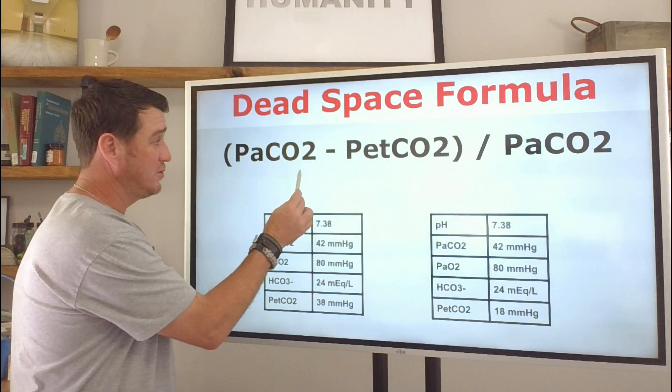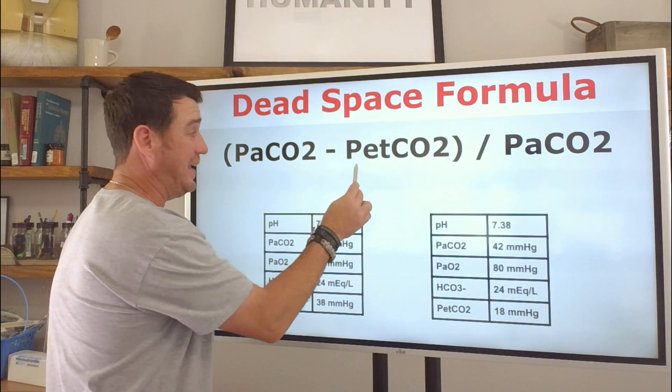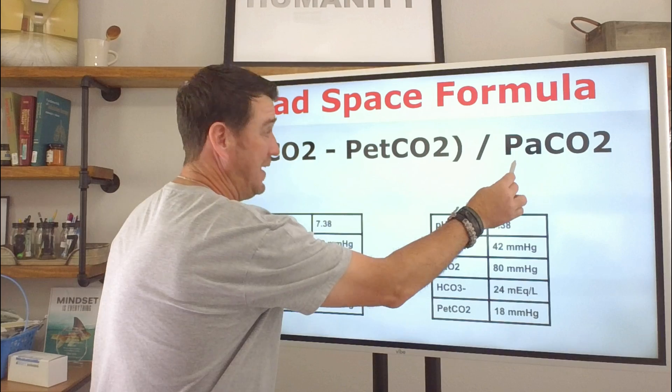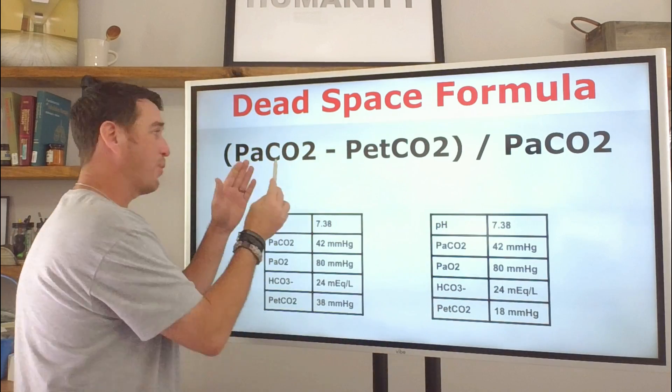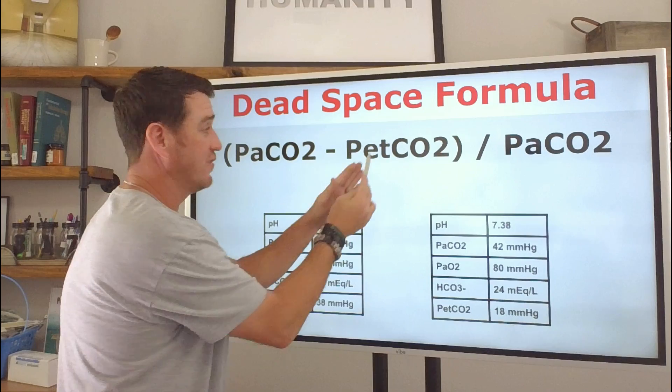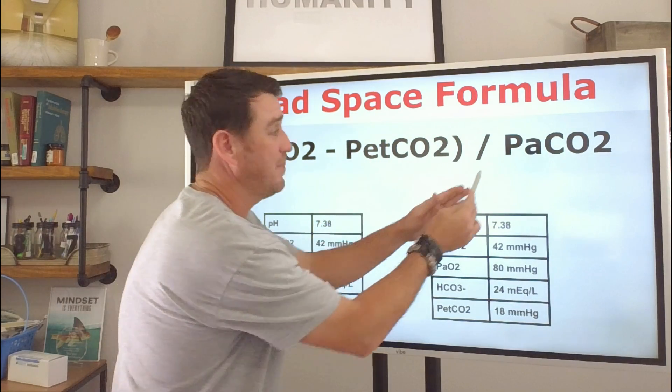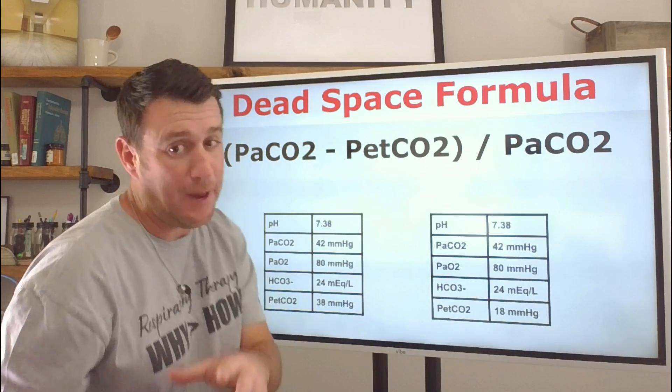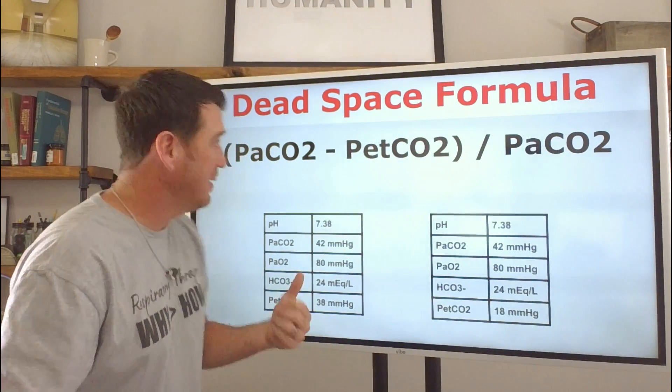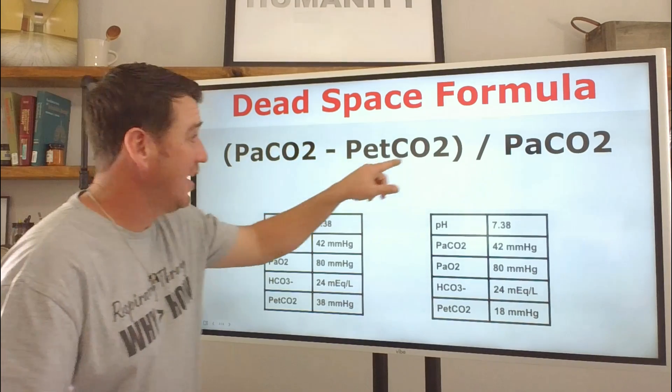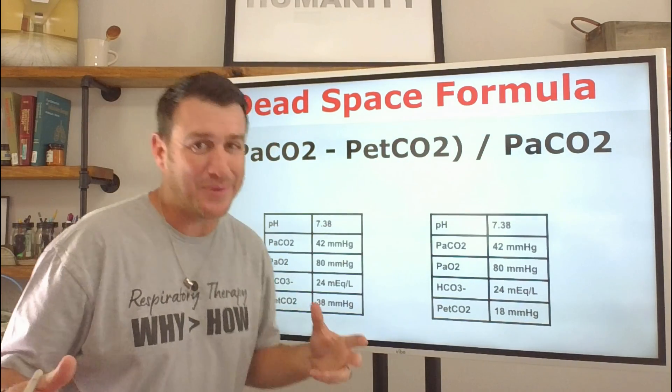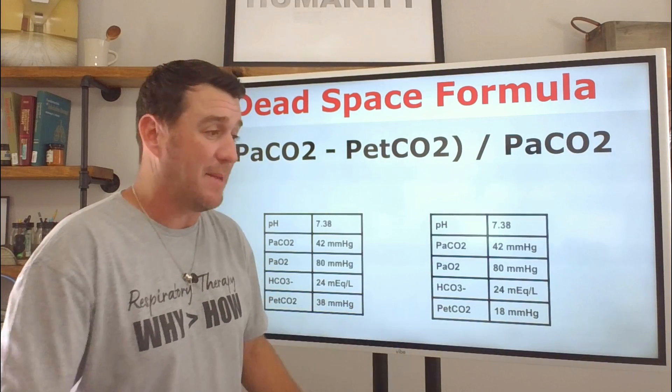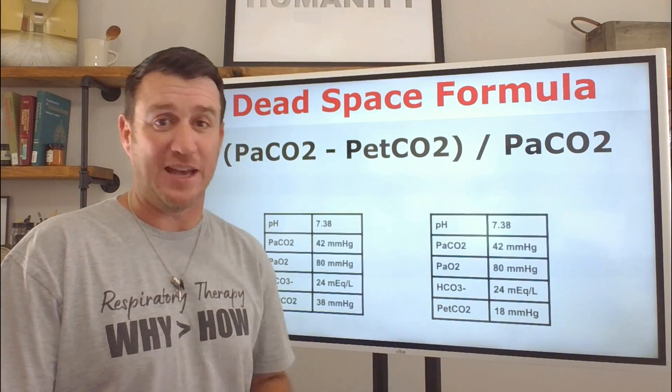It is PaCO2 minus P end tidal CO2 divided by P arterial CO2. So the pressure of arterial CO2 minus the pressure of end tidal CO2 divided by the pressure of arterial CO2. Now, that sounds complicated, but here's how you can remember it. It's basically PaCO, PetCO, PaCO. That's what it comes down to. So just remember those words. PaCO, PetCO, PaCO. Why does that matter? Because it tells you dead space.